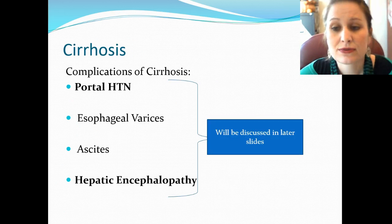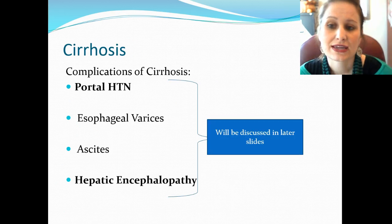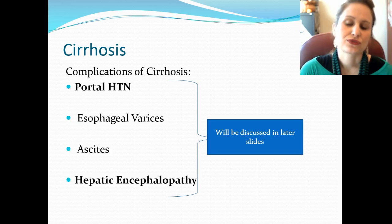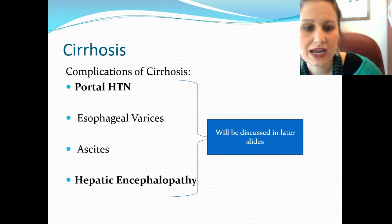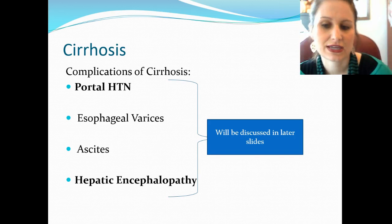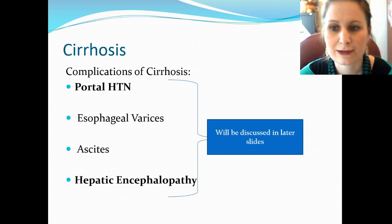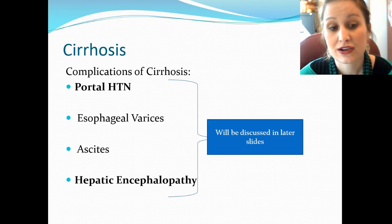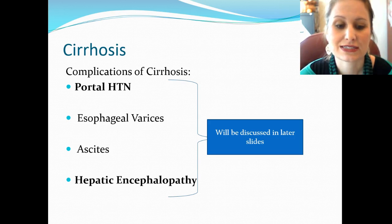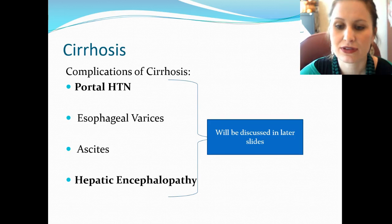Complications of cirrhosis include portal hypertension — the biggest one — which also causes esophageal varices, ascites, and hepatic encephalopathy.